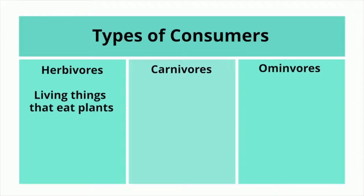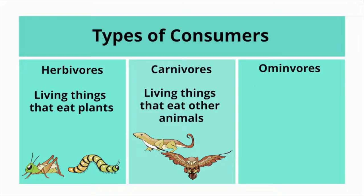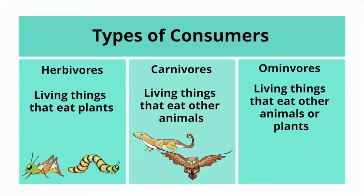Herbivores are living things that eat plants. Carnivores are living things that eat other animals. Omnivores are living things that eat other animals or plants.